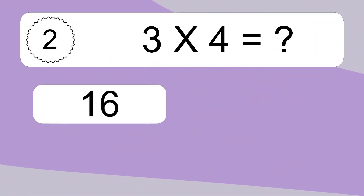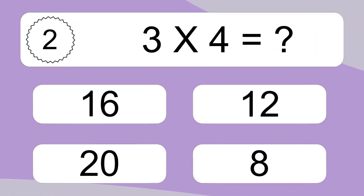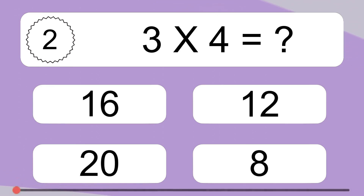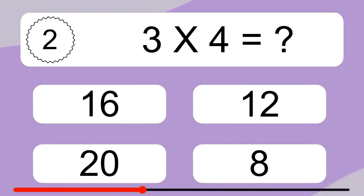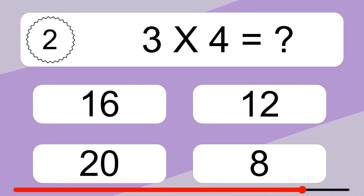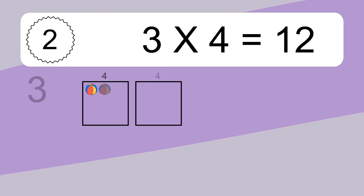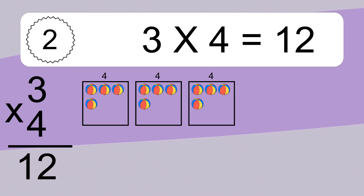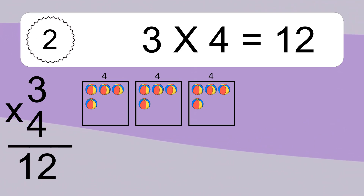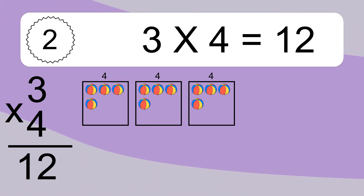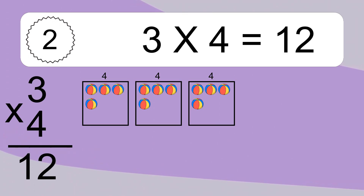3 times 4 equals what? 3 times 4 equals 12. We have 3 boxes, and each box has 4 colorful balls inside. If you count all the balls in all the boxes together, you will have 3 times 4 balls. This equals 12 balls.